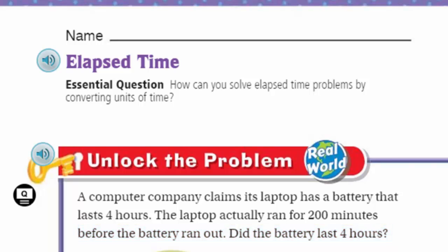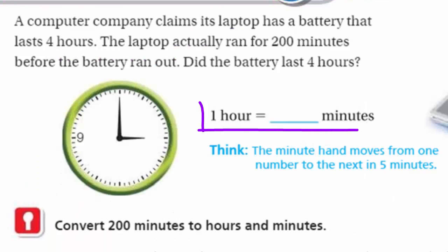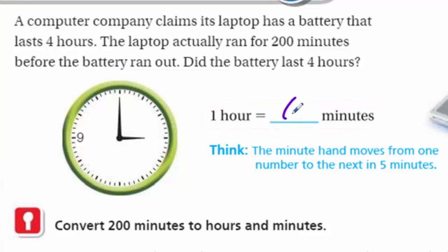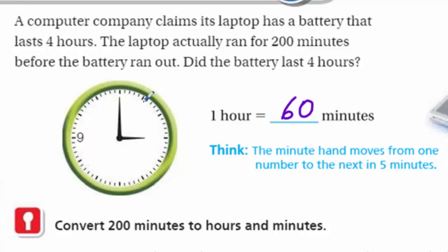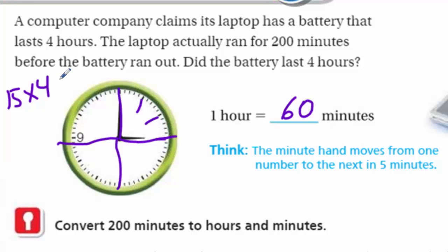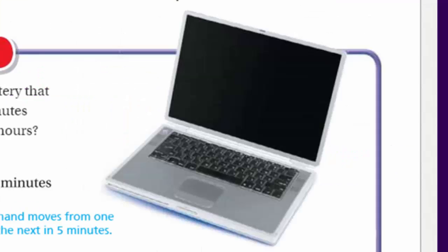We have: one hour equals how many minutes? 60 minutes - that's right! The minute hand moves from one number to the next in five minutes. Looking at our clock: 5, 10, 15 - so 15 minutes in one quarter hour. We just keep going: 15 plus another 15, plus another 15. That's 15 minutes times 4, which equals 60. Woohoo!